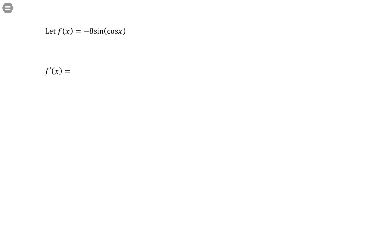Let f of x equal negative 8 sine of cosine x. This one's a tad bit tricky because the input for one trig function is some other trig function. And it looks like a mess.